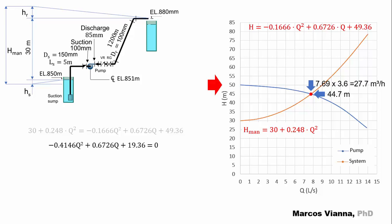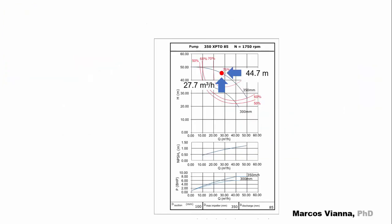we can find the values of Q and H graphically or algebraically. There are videos in this channel showing how to find the equations for the pump and for the system, a procedure which allows us to find those values. Here is the operating point in the pump chart, and here is the corresponding efficiency.